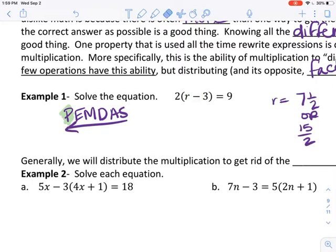So I have 2 times r and 2 times 3. Two times r is 2r. Two times 3 is 6. What sign do you think goes in the middle there? If you said the minus sign, you're right. We have 2r-6=9.